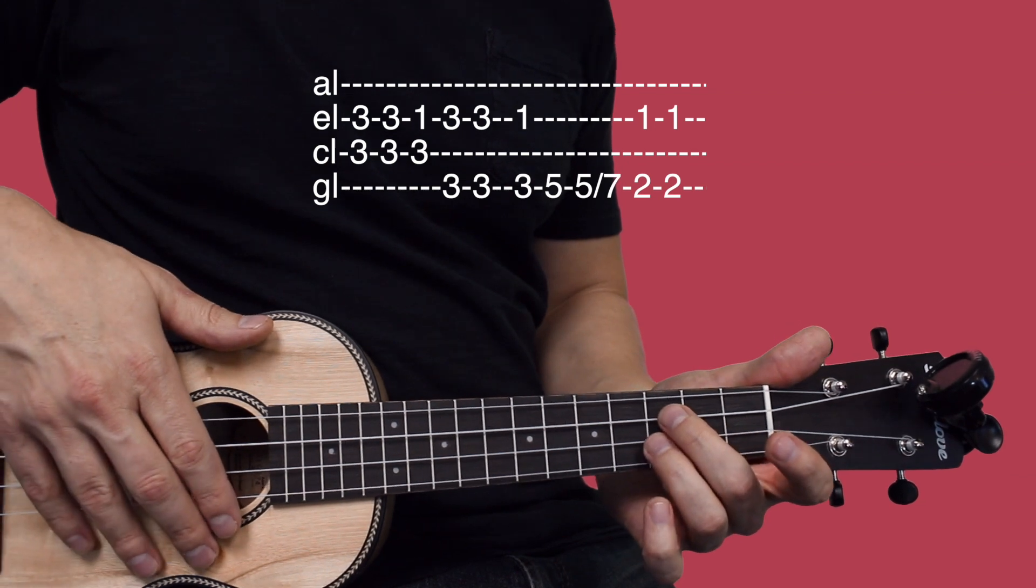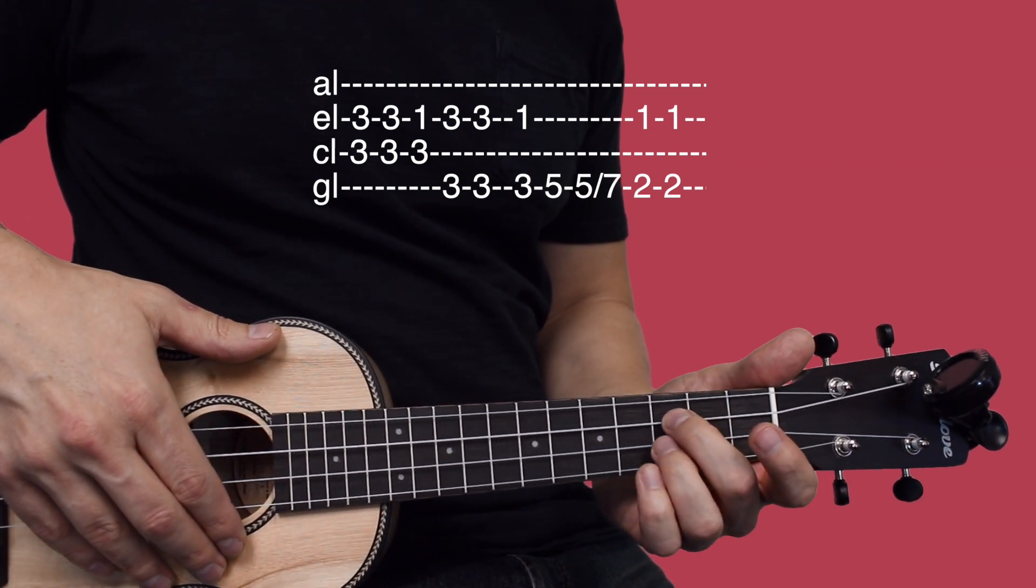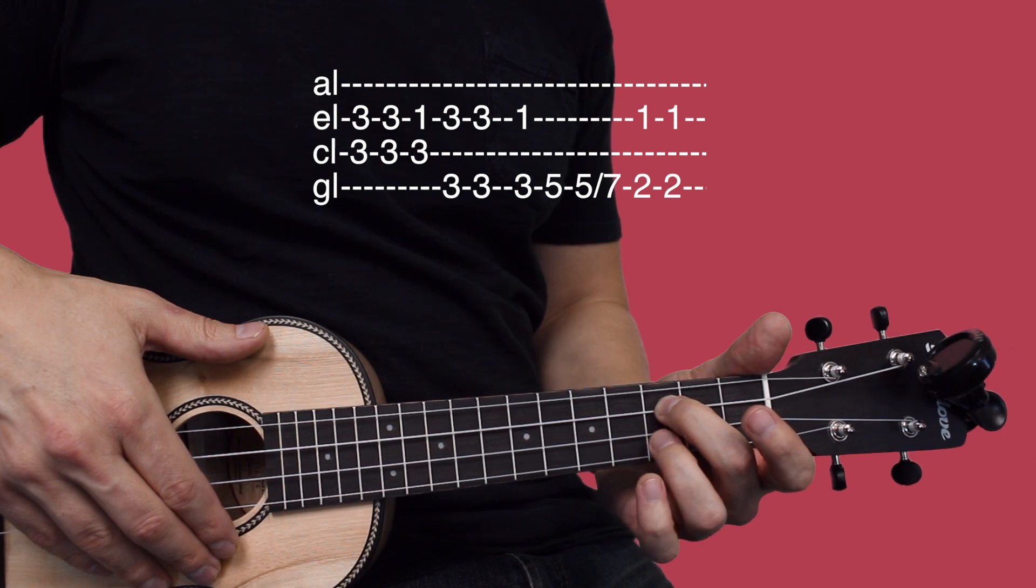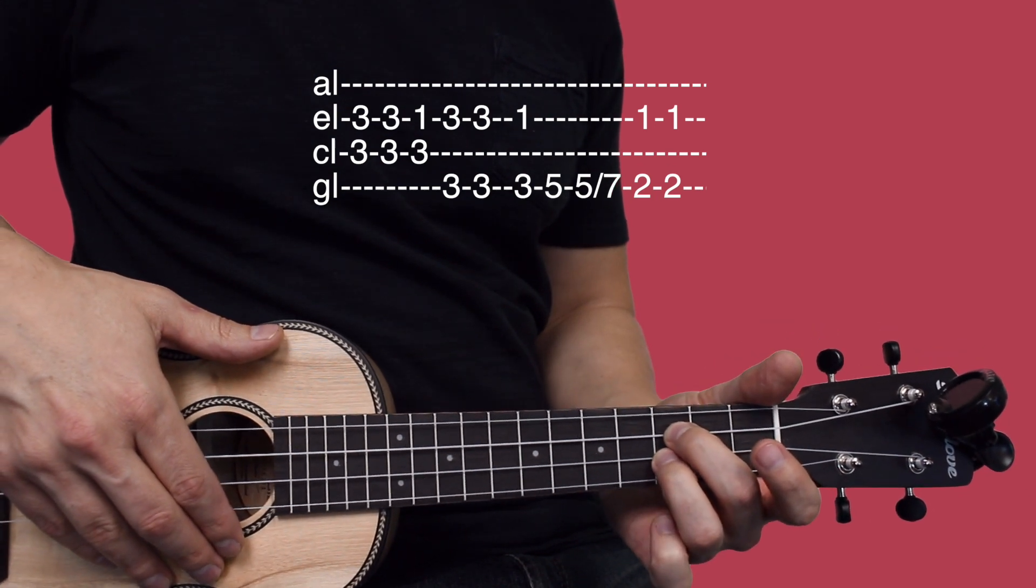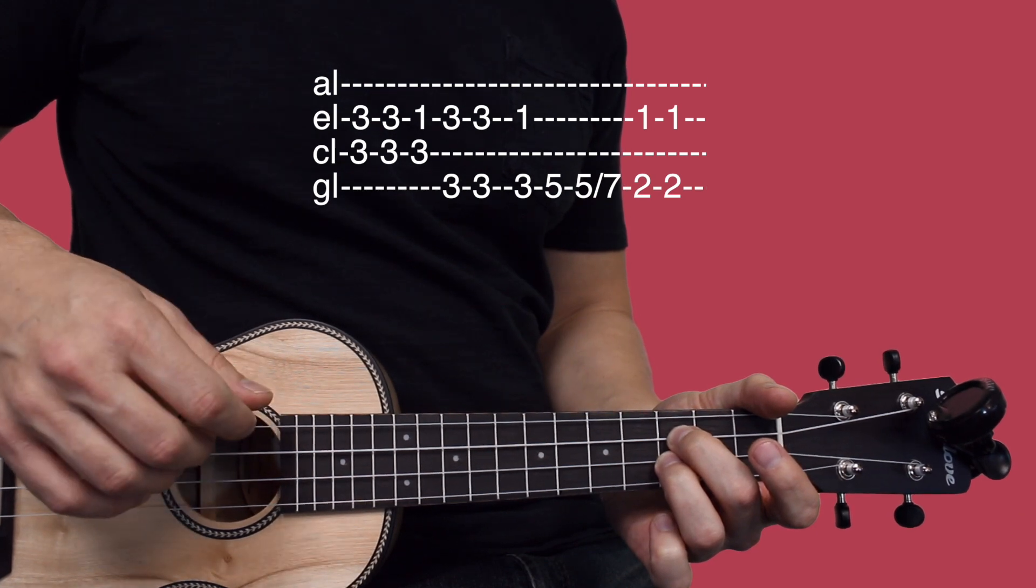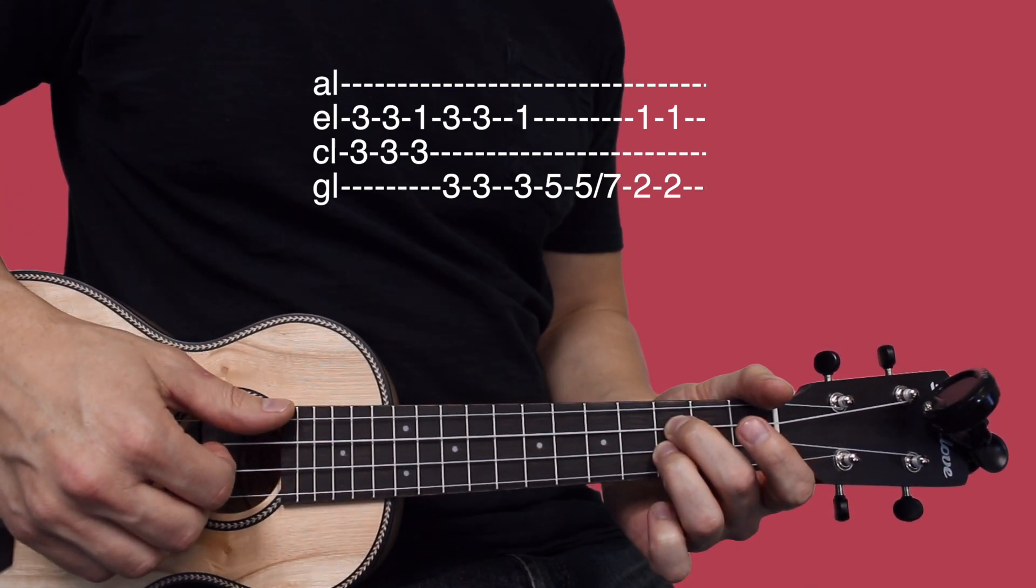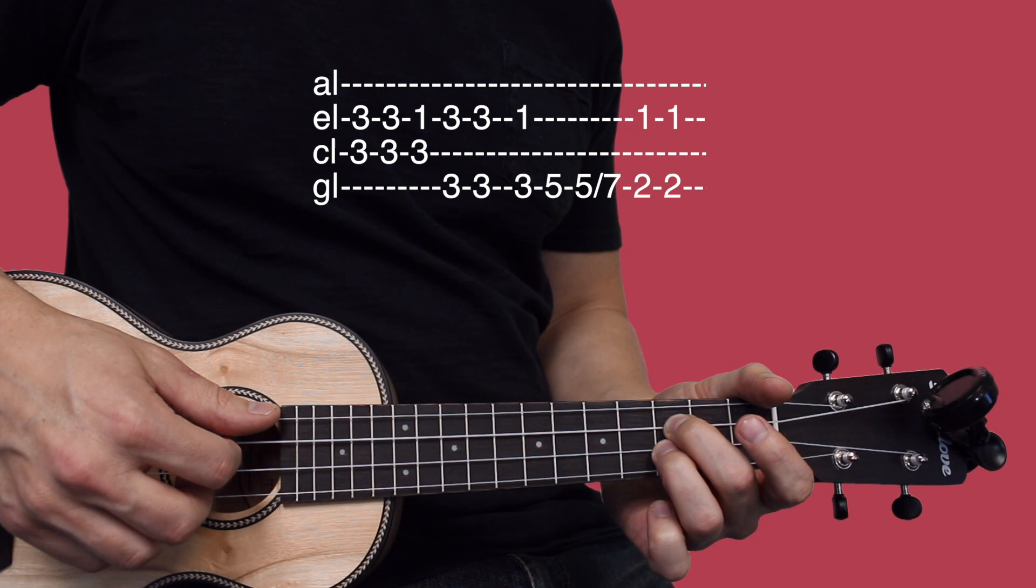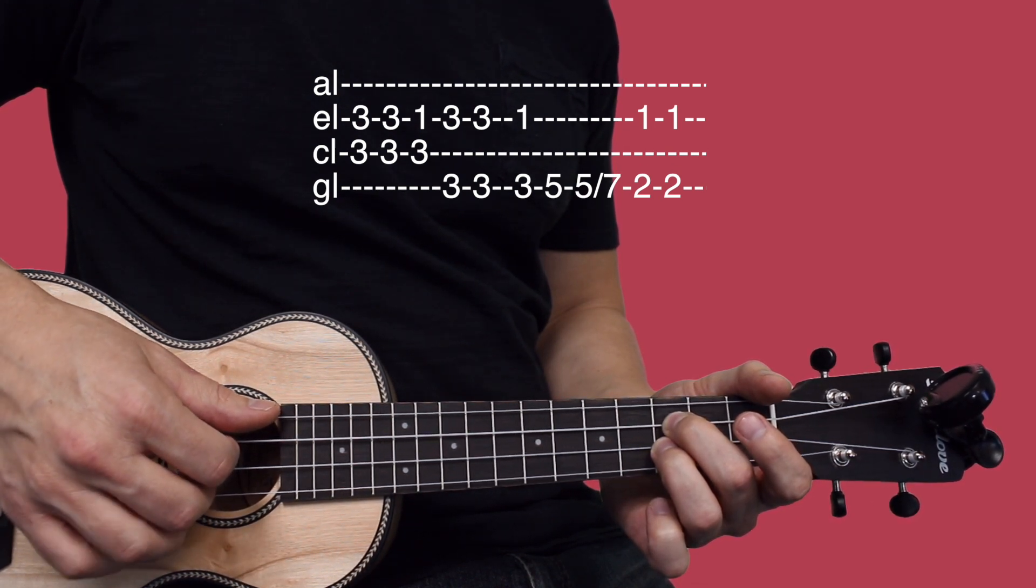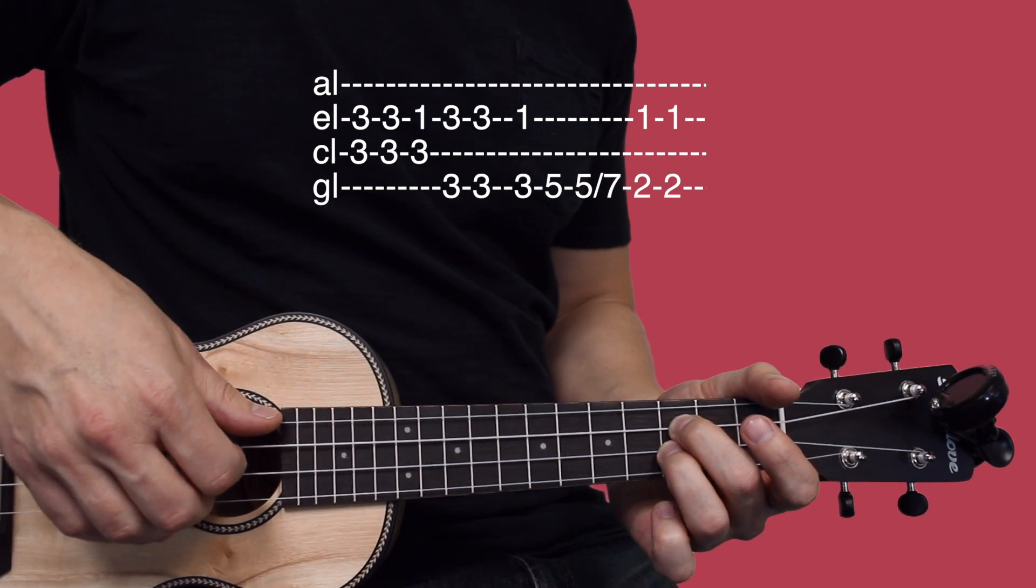What we're going to do is start with your middle finger and ring finger. Set your middle finger on the third fret of the third string, ring finger on the third fret of the second string. Now I'm assigning my fingers to the strings: thumb to the fourth string, index to third string, middle finger to second string, and ring finger to first string, although we don't use the first string at all in this song.